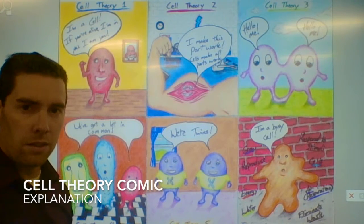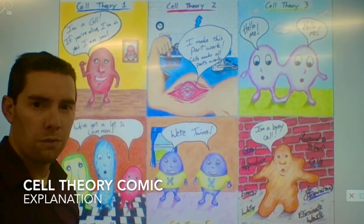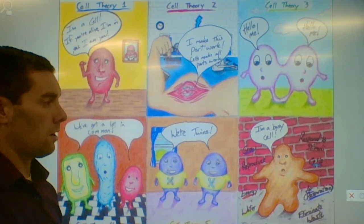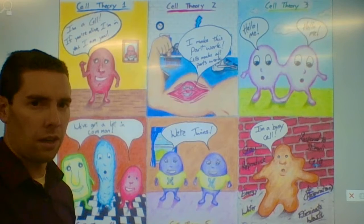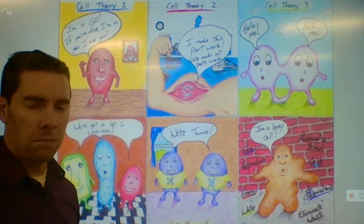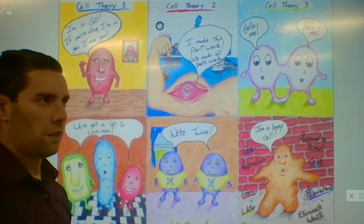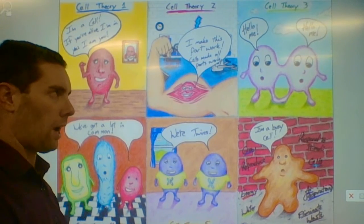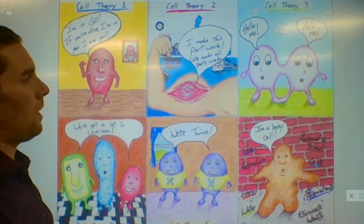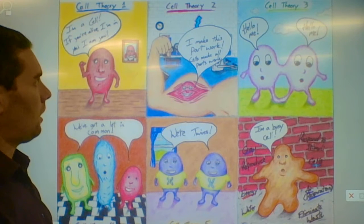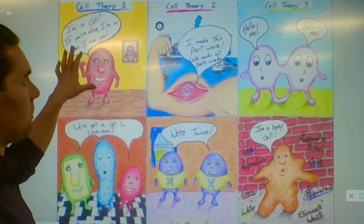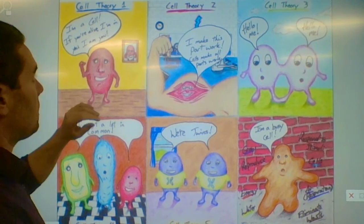Alright, seventh grade science classes — this year we've got a lot of difficult topics, and one of those is the cell theory. The cell theory is really hard to memorize, so every year we try to take our concepts and make them look a little more interesting, find clever ways to bring these things back to mind. A couple years ago I thought: let's try to make this into a comic strip and use the different parts of the cell theory, turn them into a picture I could actually remember.